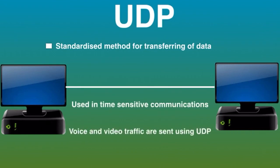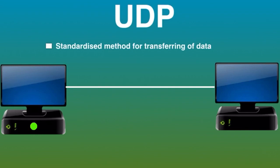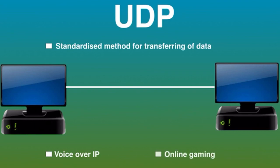UDP is commonly used in time-sensitive communications where occasionally dropping packets is better than waiting. Voice and video traffic are sent using this protocol because they are both time-sensitive and designed to handle some level of loss. For example, VoIP (Voice over IP), which is used by many internet-based telephone services, operates over UDP. UDP is also the ideal protocol for online gaming. A benefit of UDP is that broadcast and multicast connections are possible.